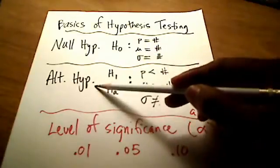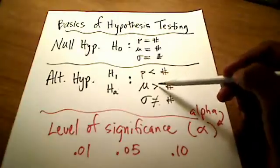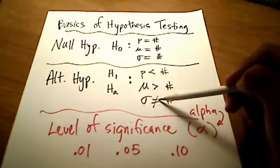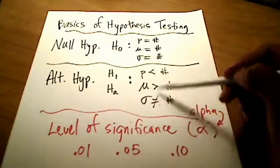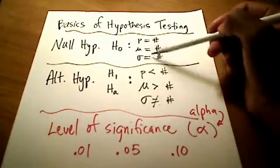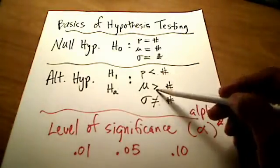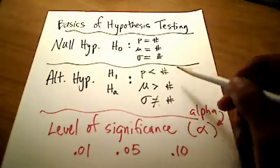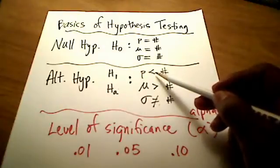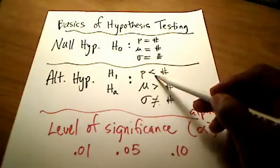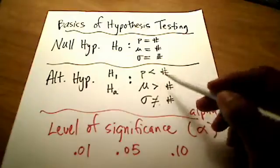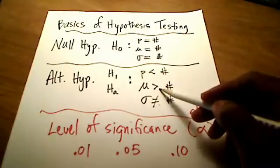The alternative hypothesis may have a less than symbol, a greater than symbol, or a not equal to symbol — the alternative hypothesis always uses a non-equal symbol. When are you going to use less than or greater than or not equal to? Depending on the phrasing of the testing, if you see the words 'less than' or 'fewer than,' it's a less than symbol. If you see 'more than' or 'greater than,' it's a greater than symbol.